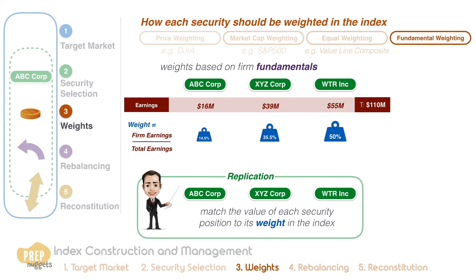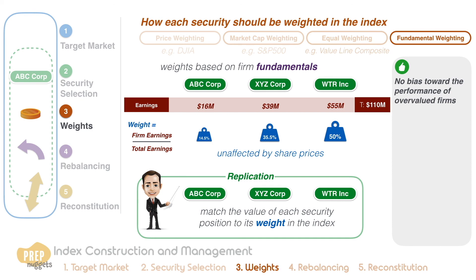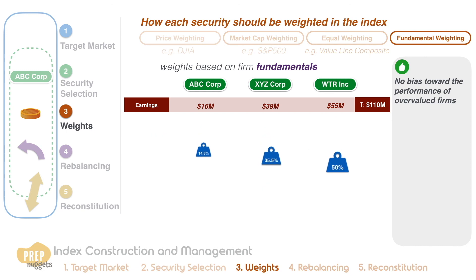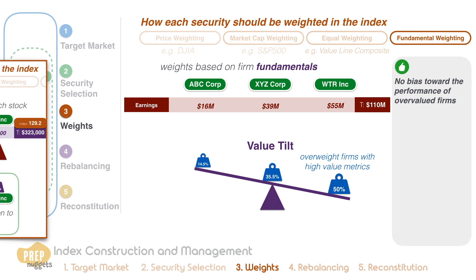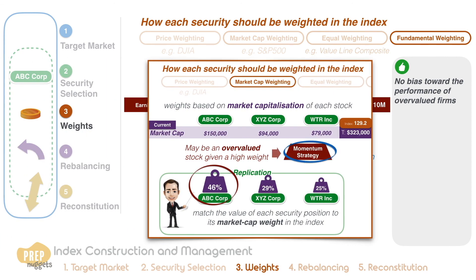However, in contrast to the market cap index weights, these weights are unaffected by the share prices of the index stocks. This means that it avoids the bias that market cap indexes have toward the performance of the shares of overvalued firms. A fundamental weighted index will actually have a value tilt, overweighting firms with high value metrics such as earnings and dividends. Contrast this with a market cap index which has a momentum effect where firms with high market cap are overweighted.